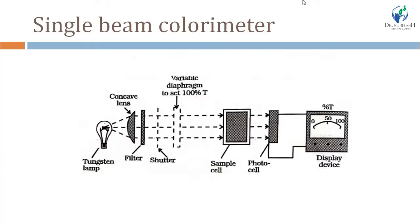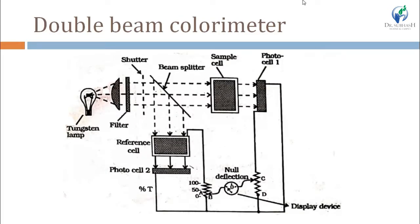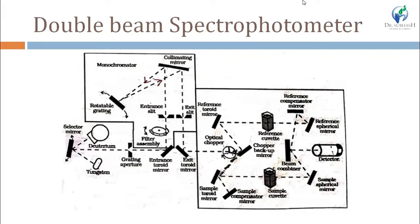This is the double beam spectrophotometer. Single beam spectrophotometers are not used nowadays, so we are seeing a double beam spectrophotometer. The figure of this double beam spectrophotometer seems complicated, but that is because multiple mirrors are used to maintain the direction of the radiation — the more mirrors, the more complex the figure appears.